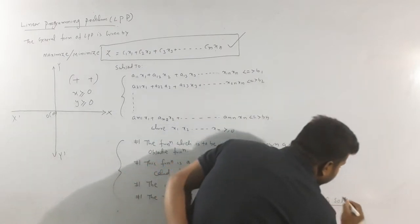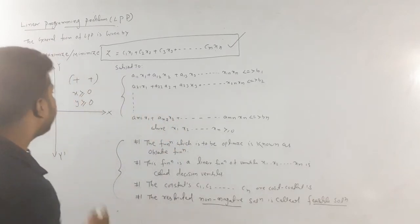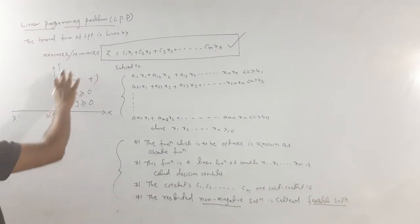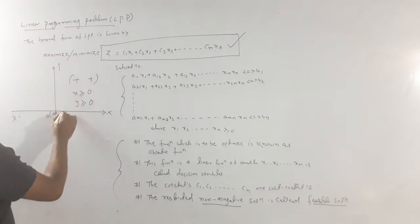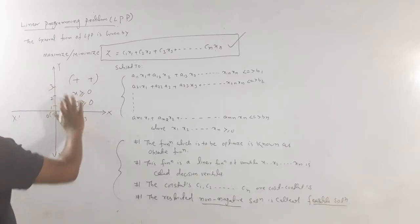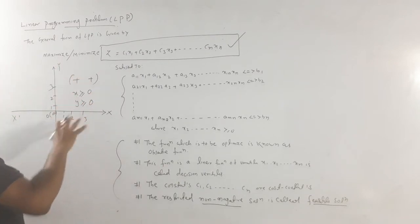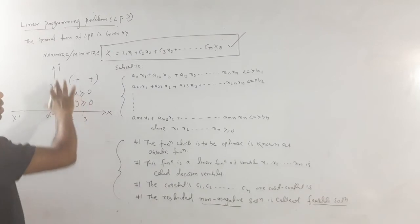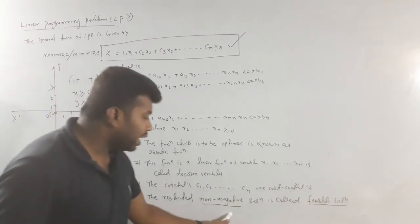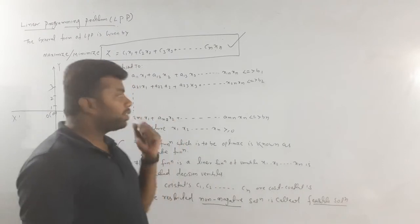The feasible solution requires non-negative values. Non-negative means positive. On a graph with x-axis and y-axis, when x is positive and y is positive, we are in the first quadrant — the plus-plus axis region. Where we graph the feasible part, it lies along the non-negative axes. So the restricted non-negative solution, meaning only the positive side, is called the feasible solution.